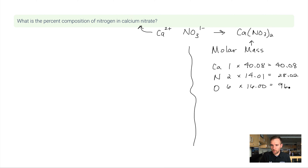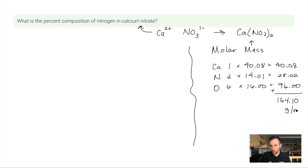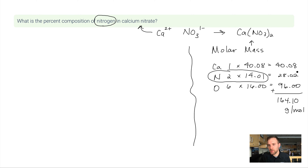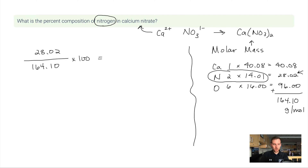So I have 40.08, plus 2 × 14.01 = 28.02, plus 6 × 16 = 96. Adding these together: 40.08 + 28.02 + 96 gives a molar mass of 164.10 grams per mole. For the percent composition of nitrogen, I put 28.02 on top — representing both nitrogens — divided by 164.10, times 100, which gives 17.08%.